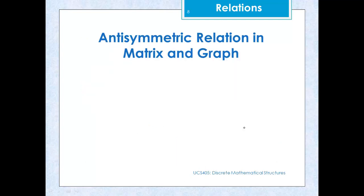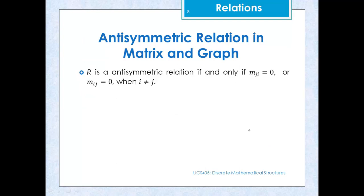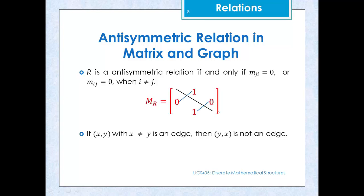For matrix representation of antisymmetric relations: if m_ij = 1 then m_ji = 0 whenever i ≠ j. For a graph, if (x,y) is an edge with x ≠ y, then (y,x) should not be an edge. That means if we have two nodes x and y with an edge from x to y, the edge from y to x should not exist.